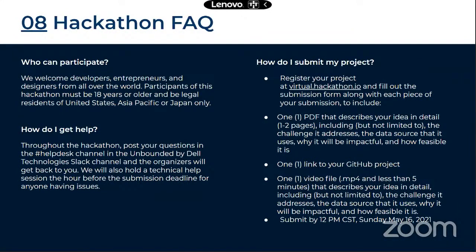Hackathon facts: who can participate — 18 years and above, residents of the US, APAC, or Japan. Check the website for the full list of eligible APAC countries. For help, use the Slack help desk channel. If you haven't joined Slack yet, please do so as soon as possible — we've been sending reminders. Mentors, organizing team members, and fellow participants are there to help.